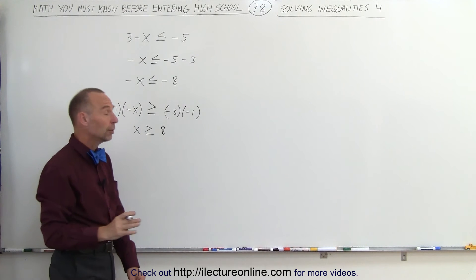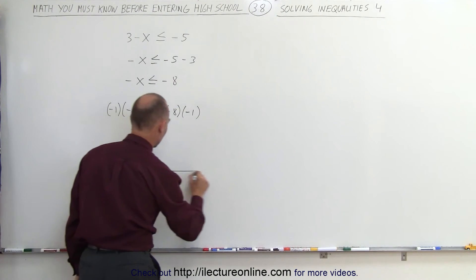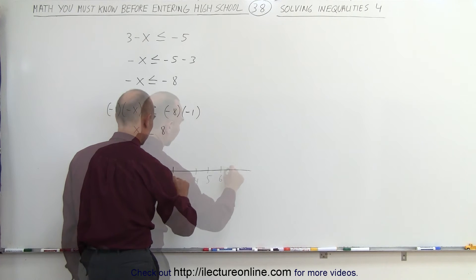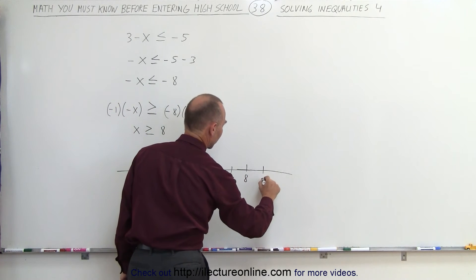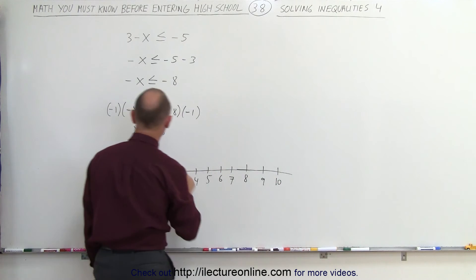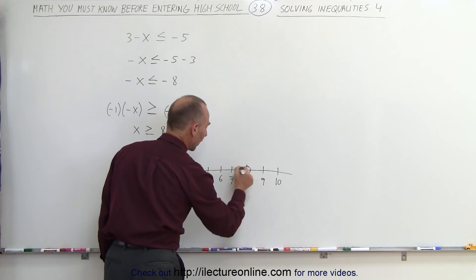When we place it on the number line, it looks as follows. So here's 0, 1, 2, 3, let's continue on here, 8, 9, and 10. The critical point will be the number 8. We draw a little circle around it.